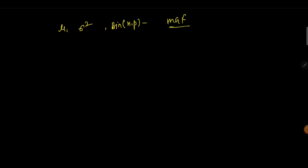We know that the moment generating function of a binomial distribution is simply M(t) equals (q + p·e^t) to the whole power n.